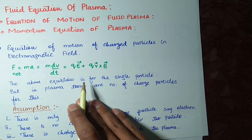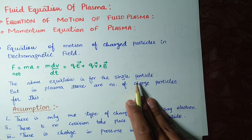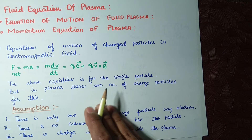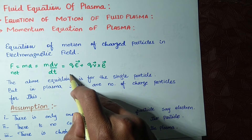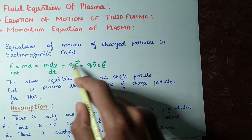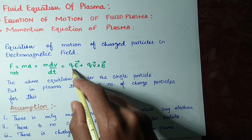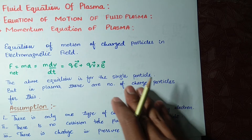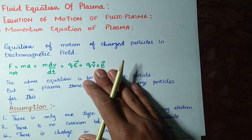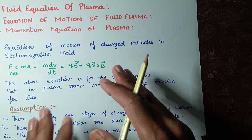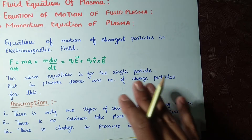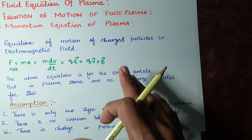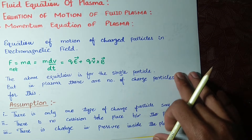The Lorentz force equation above is for a single particle, but in plasma there are a number of charged particles. This equation is only valid for a single particle where q = 1 and n = 1. When we have a bulk of charges — a large number of charges — we have to consider some assumptions to make our calculation easier.